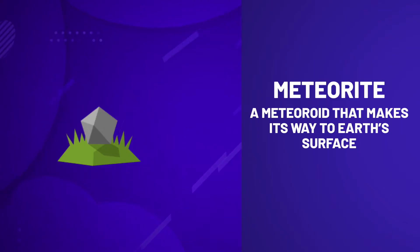Last but not least, meteorites are chunks of asteroids or comets that make it all the way through the Earth's atmosphere and land on the surface of our planet.